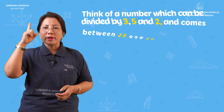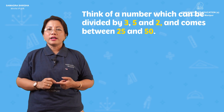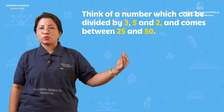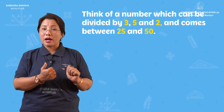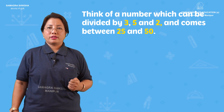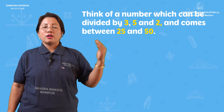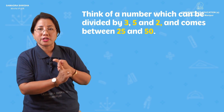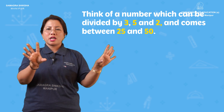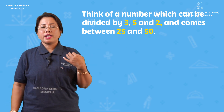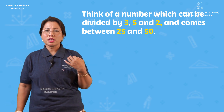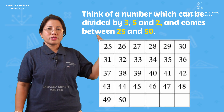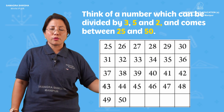Think of a number which can be divided by 3, 5, and 2, and is between 25 and 50. Looking at numbers from 25 to 50: 25, 26, 27, 28, 29, 30 — the answer is 30.